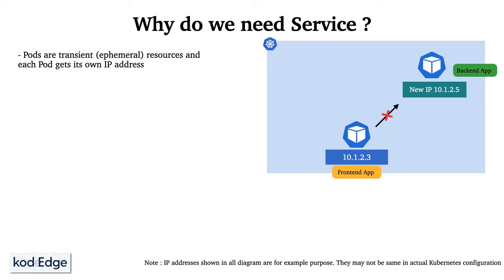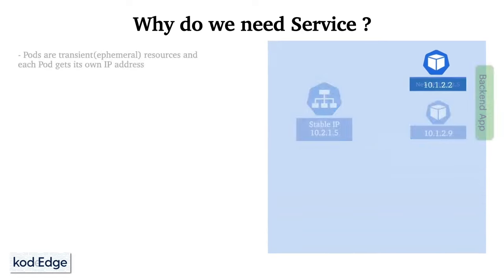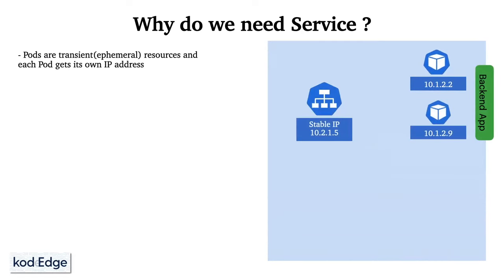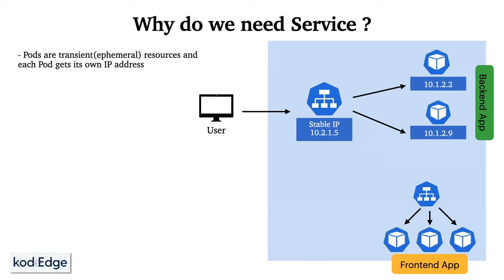To resolve this issue, we create a service. When we create a service it gets a stable IP address from Kubernetes, and the service connects with the pods. Users can access the application through the service. If a front-end pod wants to connect to a back-end pod it can do so through the service. Services play a crucial role in enabling communication between different parts of your application.